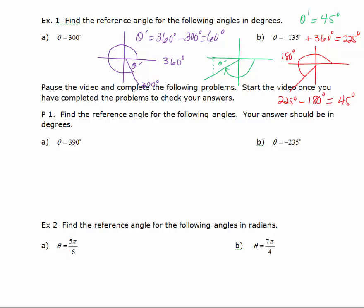The reference angle is that acute angle that you make with the x-axis. Pause the video and try practice problem 1, A and B. For 390 degrees in standard position, I want to find the acute angle theta star made with the terminal side and the x-axis. Going all the way around once is 360 degrees, so theta prime equals 390 minus 360, which equals 30 degrees.